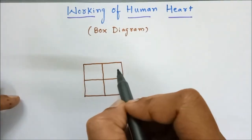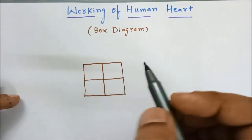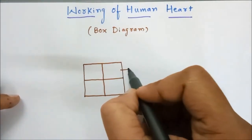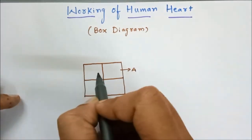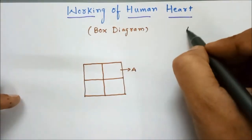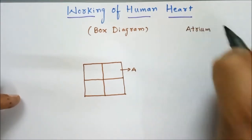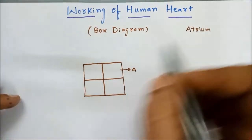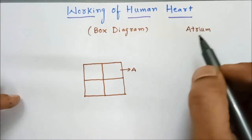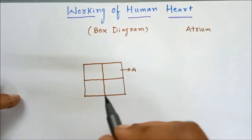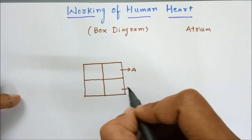The upper two chambers are called auricles or atrium. Single is atrium, atria is plural — we can also call them auricles. The lower two chambers are called ventricles.